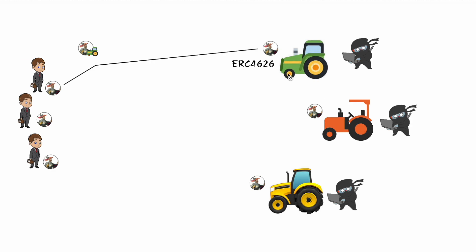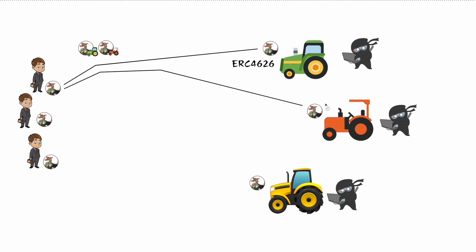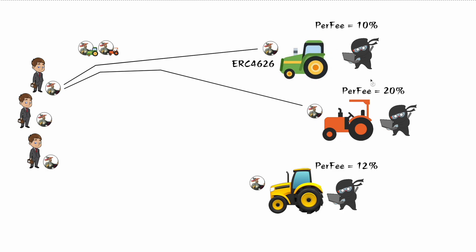Users who have Caesar tokens can deposit into these vaults and get back what we call a vault share token. If he deposits Caesar into the green tractor vault, he gets back a Caesar green tractor token; if he deposits into the red tractor, he gets Caesar red tractor token. These go up in value based on the performance of those tokenized strategies. Each strategy has its own performance fee because they are individual vaults.